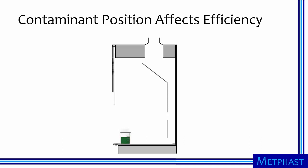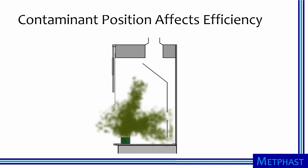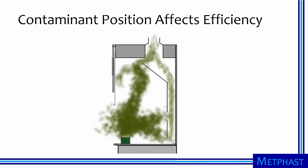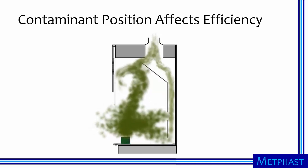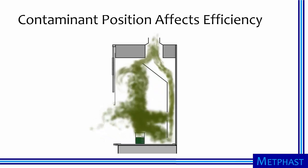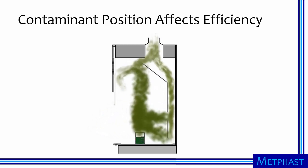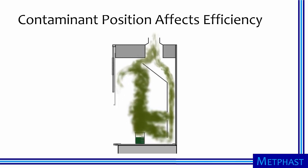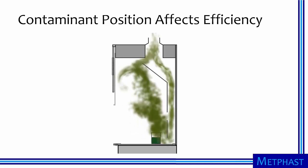The position of items emitting contaminants, or sources, affects the efficiency of the chemical fume hood. Sources placed near the front of the hood can escape capture. Instead, sources should be placed at least 6 inches and preferably 10 inches from the opening so that contaminants can follow a safe path toward the exhaust duct. Although harder to reach, contaminants from sources placed near the back of the hood will typically stay away from the front opening.